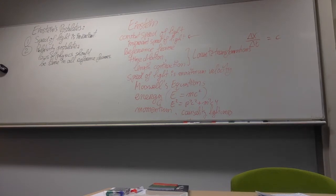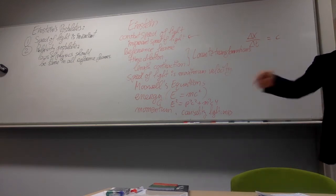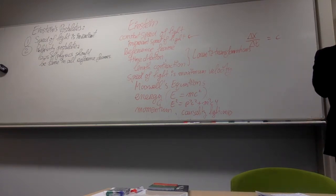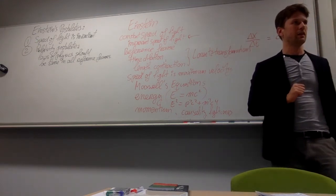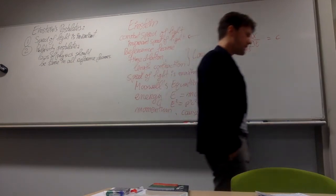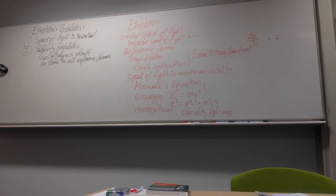If you leave out the idea that there are preferred reference frames from which you're only allowed to do physics, then the question is: which of all these reference frames is the correct one? None of them are. All of them are fine. Back to history: when people found the invariance of the speed of light, one way to resolve it was to assume Maxwell's equations are only valid from one reference frame. Einstein said no — everybody is allowed to use that. That's the second postulate.